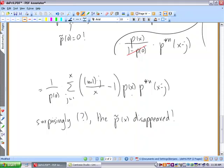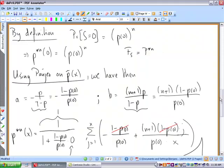So this is surprising in the sense that we have applied Panjer on the distribution p tilde and this just disappears afterwards.